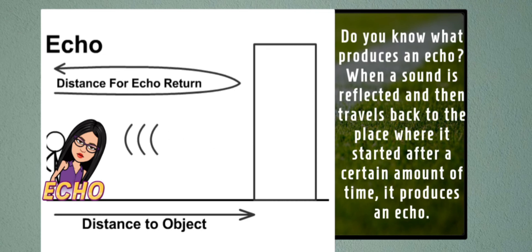Now, what is an echo? Do you know what produces an echo? When a sound is reflected and then travels back to the place where it started after a certain amount of time, it produces an echo.